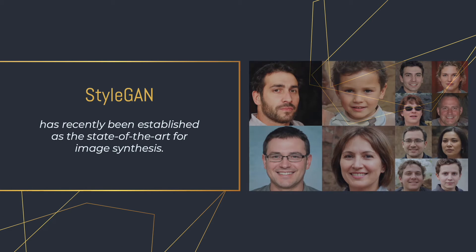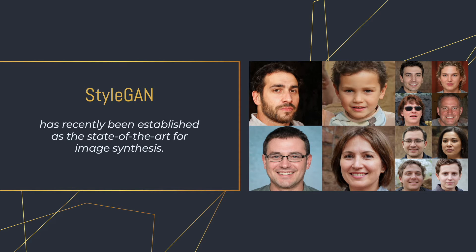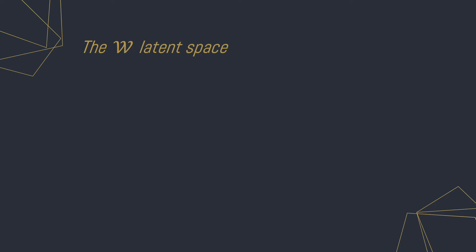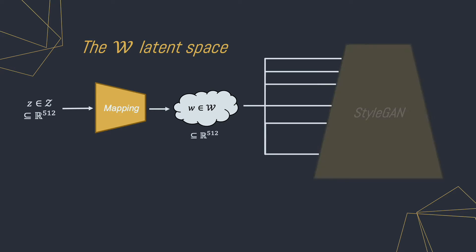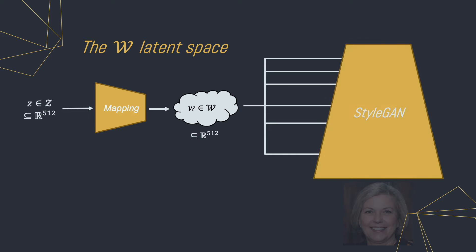With its state-of-the-art visual quality and diversity, StyleGAN has recently been established as the state-of-the-art model for image synthesis. Beyond its unprecedented visual quality, StyleGAN has a learnt latent space W, which has been shown to effectively encode semantic information while containing intriguing disentanglement properties.